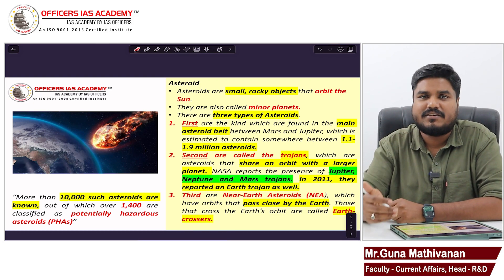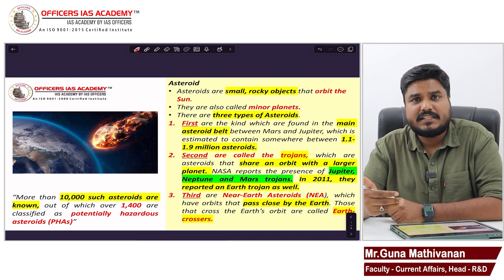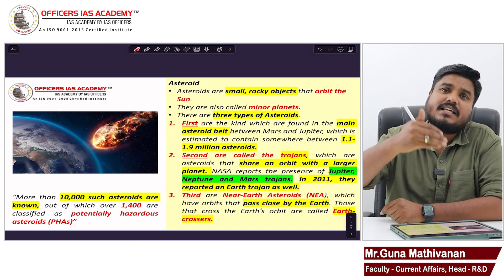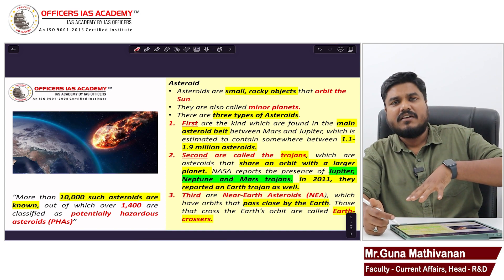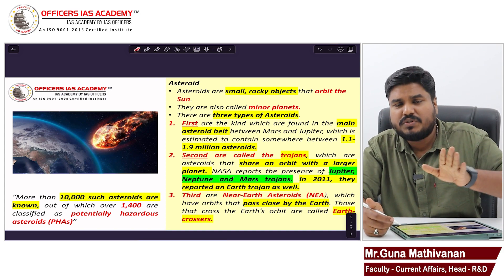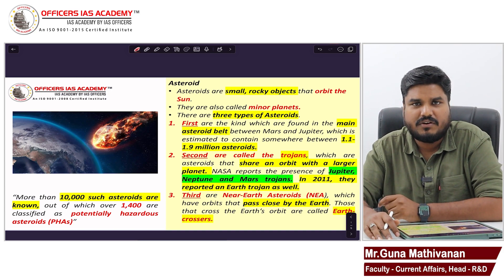The second classification is Trojan asteroids. These share the orbit of other planets — along with Jupiter, Neptune, and Mars you will find some asteroids. Earth also has a Trojan asteroid. The third classification is near-Earth asteroids, or Earth crossers — asteroids which come very close to Earth.